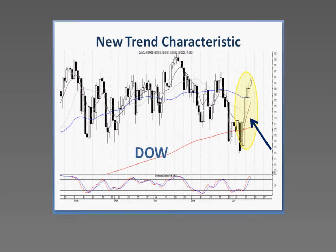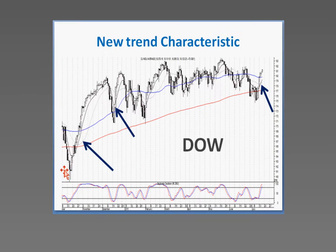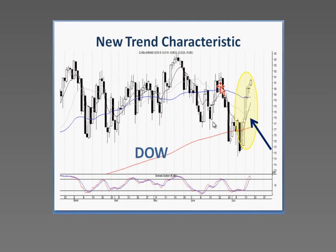There's a different characteristic than what we've seen in the recent past. When they start taking it up strong without pulling back, it's usually a very strong price move. Note where we are as far as this downtrend, especially on the Dow — today they've gone through it. So that means there are different characteristics at play.